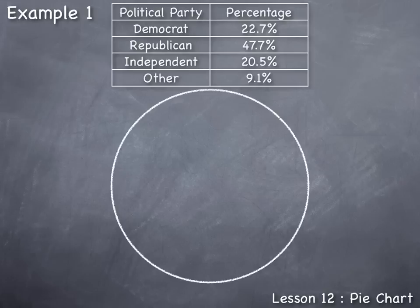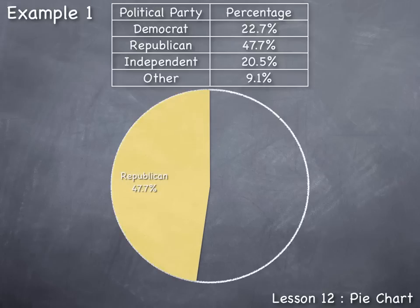The Republican section is forty-seven point seven percent, so forty-seven point seven percent of this pie chart needs to be given to the Republican section. Forty-seven point seven percent is just about two point three percent shy of half, or fifty percent of the pie. So we draw a section showing that amount and we label it Republican with its value, forty-seven point seven percent.